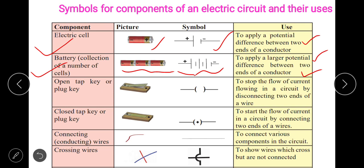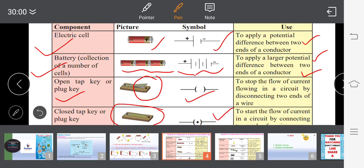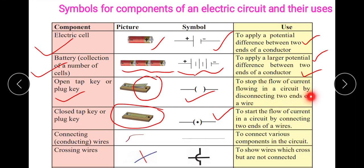There is an open tap key or plug key. Whenever there is no connection, that means it is an open key. When the metal is making the connection, it is a closed key. Whenever the key is open, it has one symbol; whenever it is closed — a dot inside the bracket — it means it is closed. Whenever the connection is open, the current will not flow. A closed tap key starts the flow of current in the circuit by connecting the two ends of a wire.